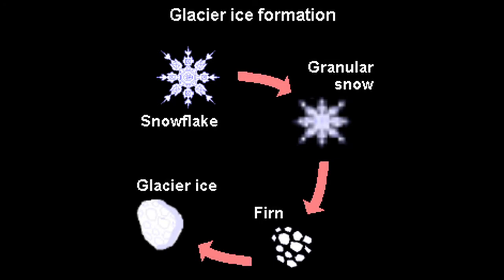Through time, with pressure and freeze-thaw cycles, the snow, which is mostly air, starts to compress and compact. As it starts to compress and compact, it gets denser. As you build up over time, you start to get it becoming even more dense, turning into more of a granular surface, as opposed to snow.